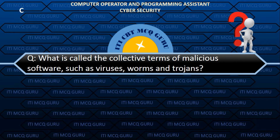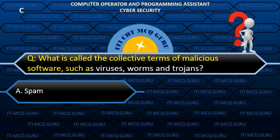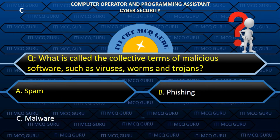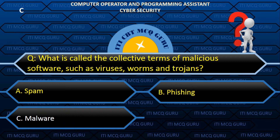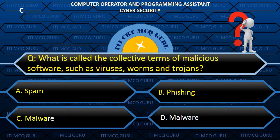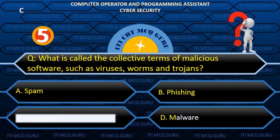What is called the collective term for malicious software? Software such as viruses, worms and trojans. Answer: C. Malware.